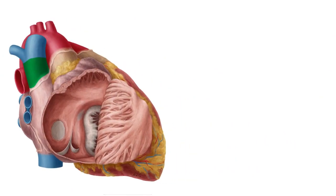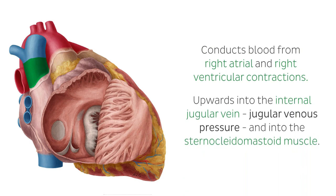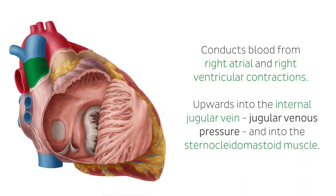There is no valve that divides the SVC from the right atrium. This means blood from right atrial and right ventricular contractions is conducted upwards into the internal jugular vein, which is measured as the jugular venous pressure, and into the sternocleidomastoid muscle.